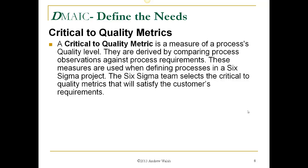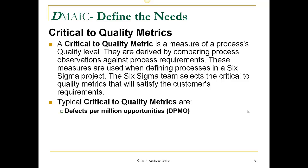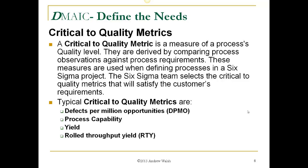Critical-to-quality metrics. A critical-to-quality metric is a measure of a process's quality level. They are derived by comparing process observations against process requirements, and are used when defining processes in a Six Sigma project. The Six Sigma team selects the critical-to-quality metrics that will satisfy the customer's requirements. Typical critical-to-quality metrics include defects per million opportunities (DPMO), process capability, yield, rolled throughput yield, and Sigma level.